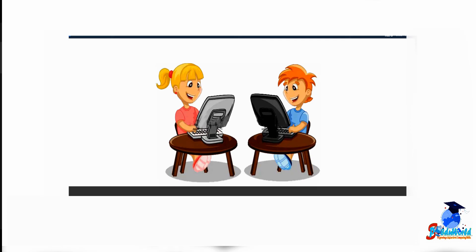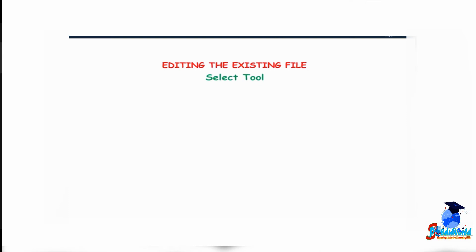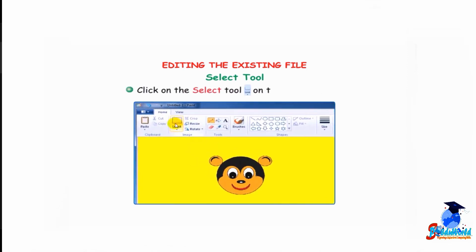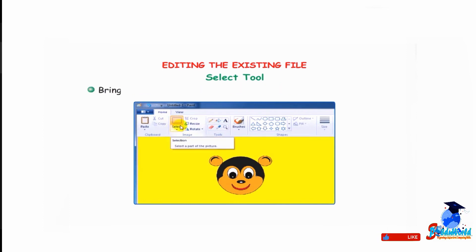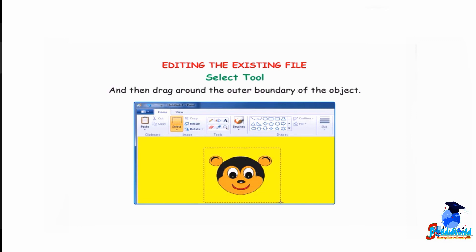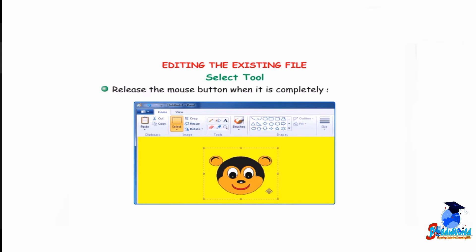Let us understand how to edit an existing file. The select tool is used to select any part of the picture that we want to change. Click on the select tool in the image group. Bring the mouse pointer over the object that is to be selected. Click and hold down the left mouse button and then drag around the outer boundary of the object. Release the mouse button when it is completely selected.